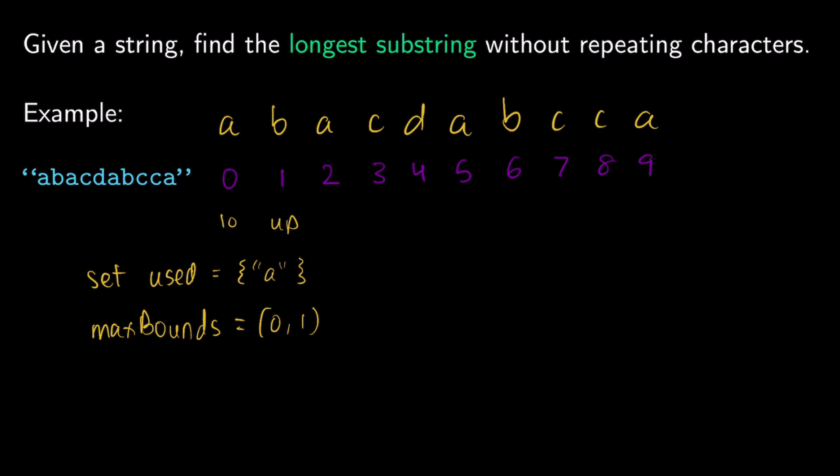Now we can start traversing. Up is at index 1, so the character at index 1 is B. Is B in used? No, it's not. So we can add it to used. Now we increase up by 1, so now up is at index 2. Before we check again, we have to update max_bounds. Currently the maximum bounds is from 0 to 2. We check: is 2 minus 0 greater than 1 minus 0? It is, so our max_bounds is now updated to (0, 2).